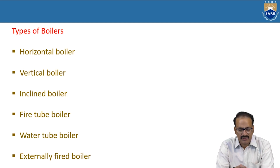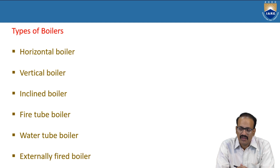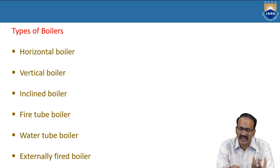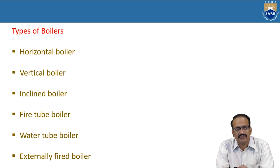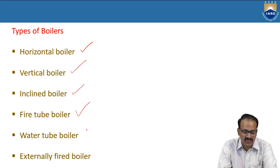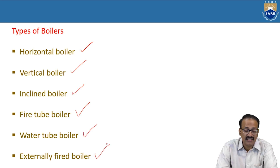Today we will discuss about the boilers and the types of boilers. There are many types. Some types I will tell now: horizontal boiler, vertical boiler, inclined boiler, fire tube boiler, water tube boiler, externally fired boiler.